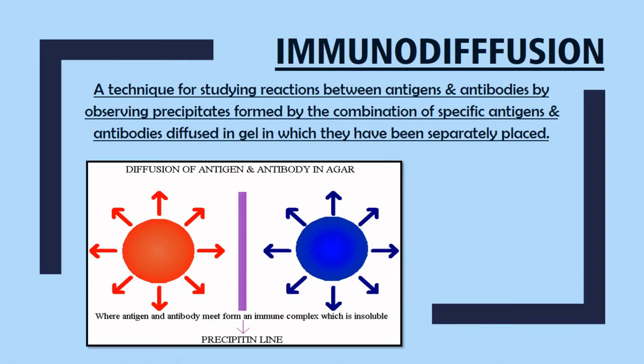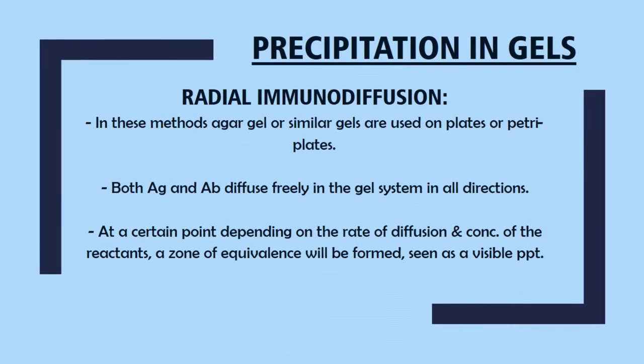Using this principle, we will learn about four different methods, out of which two are extensively used today in research institutes. Precipitation can also be done in liquids; however, the methods being used extensively generally involve gels and not liquids. There are reasons for this: after diffusion, if we want to recover the immune components, liquid medium will not be of any use. Therefore, gels are preferred.